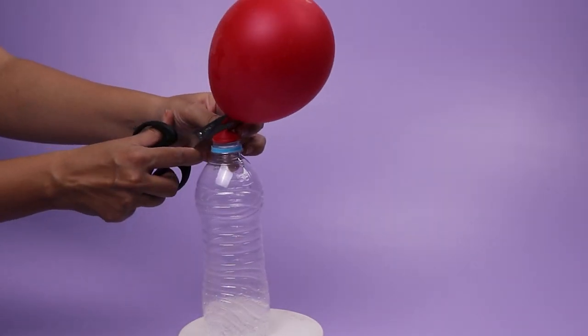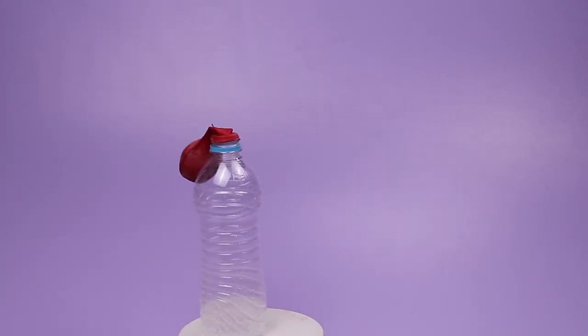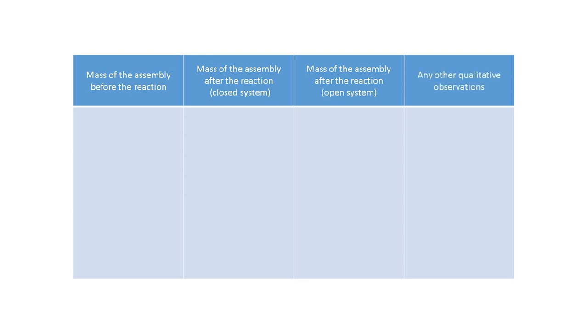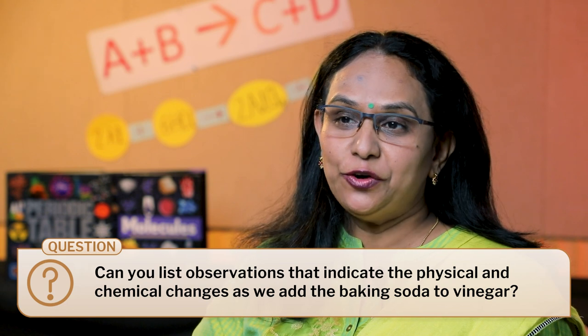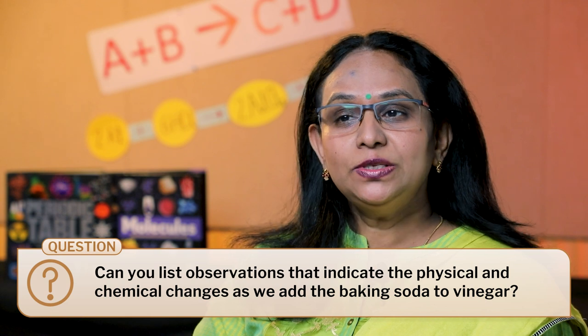Again, repeat the experiment, but this time open the balloon cap midway as the reaction takes place. It is good to record observations such as the mass of the assembly before the reaction, mass after the reaction in a closed system, and mass after the reaction in an open system on the blackboard. Later on, I wrote down these chemical reactions on the blackboard and discussed them with the students, asking them to discuss the molecules on the left and right side of the reaction and whether mass is conserved.